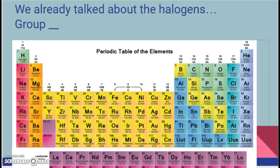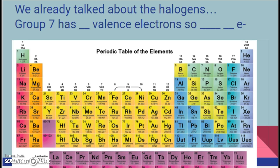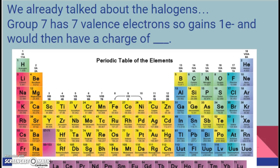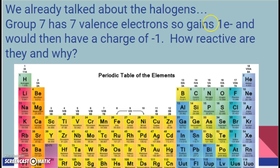We already talked about the halogens — let's review. The halogens are group 7. So how many valence electrons? Group 7 means there are seven outer electrons, or seven valence electrons in the outermost orbital. Because it has seven valence electrons, it is going to gain one electron to get a full outer shell. After gaining an electron, what is its charge? For example, chlorine is element 17: it starts with 17 protons and 17 electrons — 17 minus 17 is zero, neutral. But if it gains an electron, now I have 17 protons minus 18 electrons, giving a charge of negative one. When we gain electrons, we become more negative.